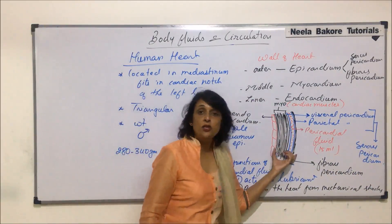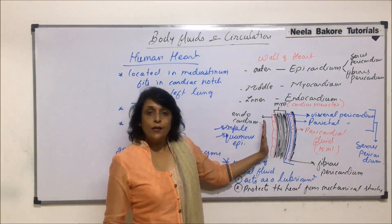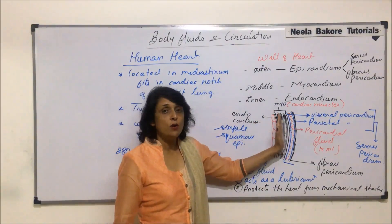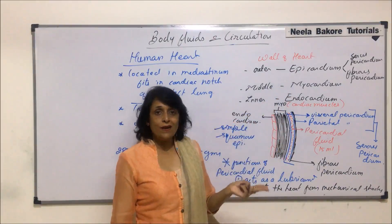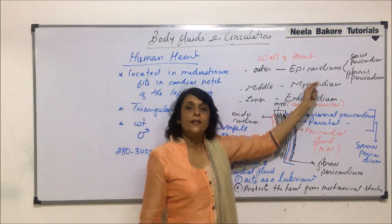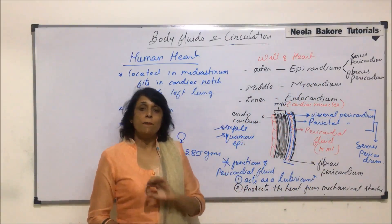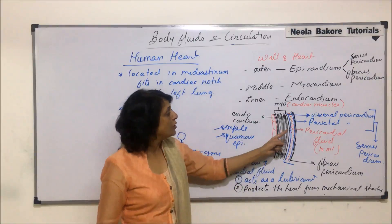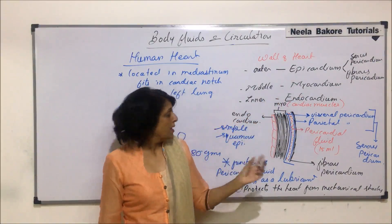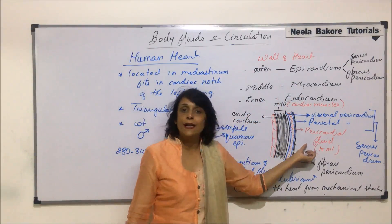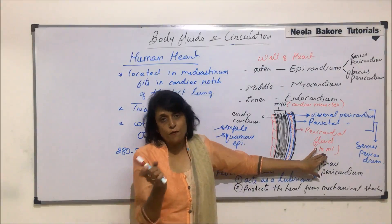This complete structure makes up the wall of the heart — inner endocardium, middle myocardium, and outermost epicardium. Epicardium has two layers: serous pericardium and fibrous pericardium. When we say pericardium, we are normally referring to the serous pericardial layer, which contains the pericardial fluid of about 15 milliliters that provides lubrication and protection from mechanical shocks.